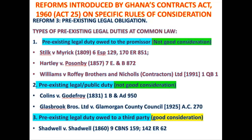I already have an obligation to the insurance company to help locate the missing vehicle. Then Ama, a third party stranger, promises that I should help her find the same vehicle because she wants to use it for a photo shoot. Under common law there has been a question about whether the performance of a pre-existing legal duty owed to a third party — in this case Onyaa Insurance Company Limited — can be good consideration to support the promise that Ama made to me. In other words, if I have located the vehicle, can I sue Ama to recover the five thousand dollars she promised me?